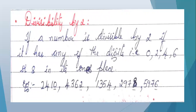Divisibility by 2: if a number has any of the digits 0, 2, 4, 6, or 8 in its ones place, then it is divisible by 2. The numbers may be given, so we will check in the ones place. Whatever the number is given, if the ones place has 0, 2, 4, 6, or 8, then that whole number is divisible by 2.